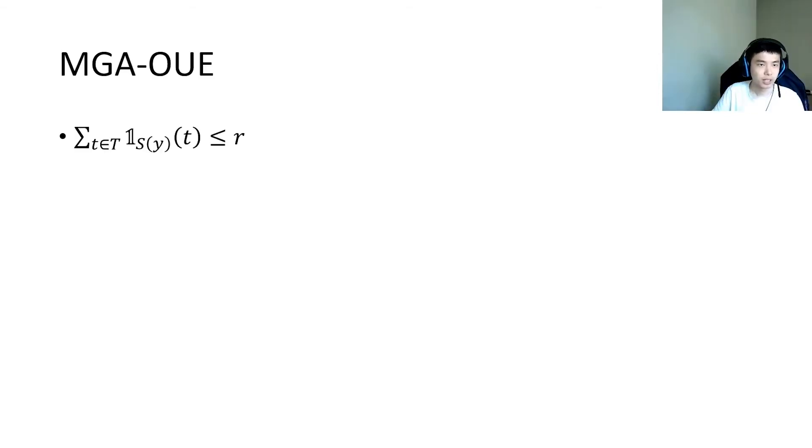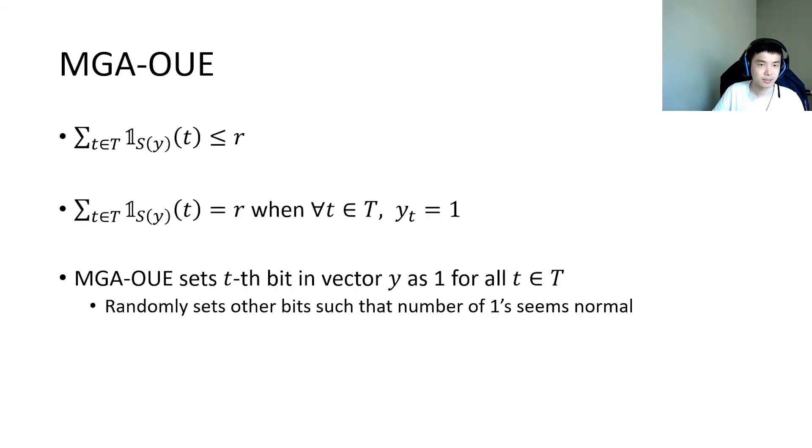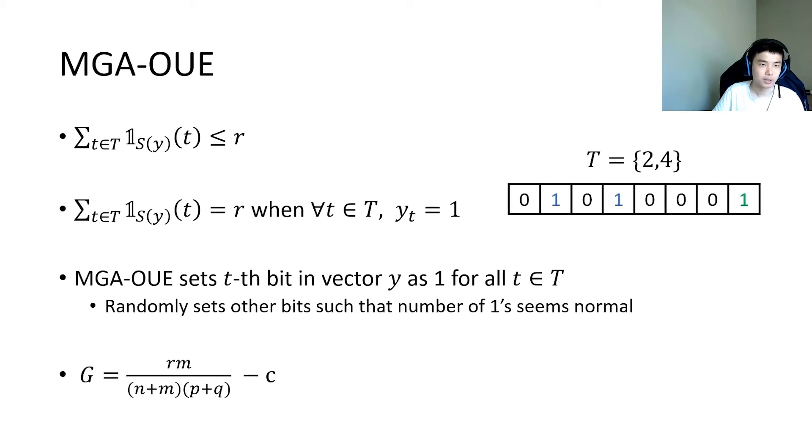In OUE, for each fake user, MGA sets the corresponding bits of the target items to 1 in the perturb vector. Moreover, we also randomly choose some other bits and set them to 1, such that the number of 1s seems normal in this vector. The overall gain of MGA-OUE can be expressed as those.